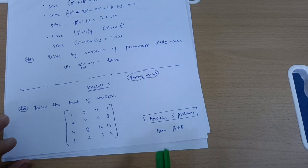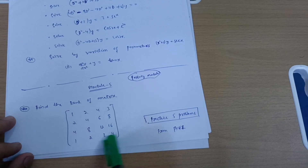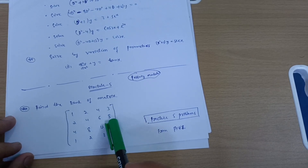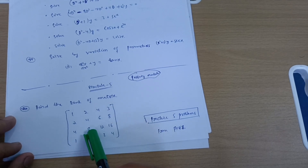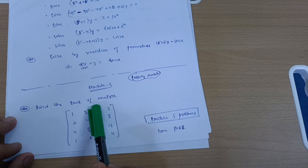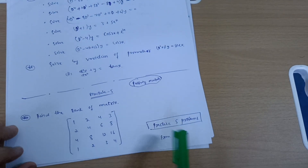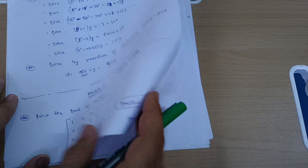In module five, find the rank of the matrix. One example: the matrix with rows [1, 2, 4, 3], [2, 4, 6, 8], [4, 8, 12, 16], [1, 2, 3, 4]. Practice 5 to 6 problems on rank of matrix from previous question papers. Videos are available — you can go through them.